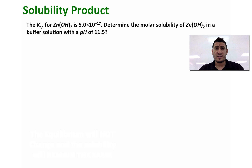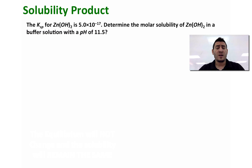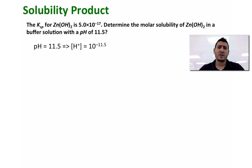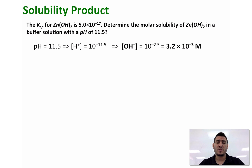Let's take a look at this practice example on the effect of pH on solubility. The question says the Ksp for zinc hydroxide is 5.0 × 10⁻¹⁷. Determine the molar solubility of zinc hydroxide in a buffer solution with a pH of 11.5. If pH = 11.5, then the concentration of H⁺ is 10⁻¹¹·⁵ molar. We are not interested in [H⁺] because the common ion here is OH⁻, so we find [OH⁻] = 10⁻²·⁵ = 3.2 × 10⁻³ molar.